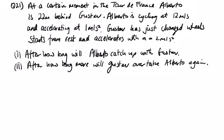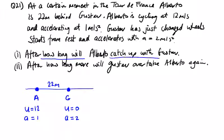Question 21. At a certain moment in the Tour de France, Alberto is 22 meters behind Gustaf. Alberto is cycling at 12 meters per second, so Alberto's U equals 12 and a equals 1. And Gustaf has just changed the wheel, so his initial velocity is zero, and he accelerates with a equals 2. After how long will Alberto catch up with Gustaf? So how long we're looking for time. So let's have a look at our distance and time.